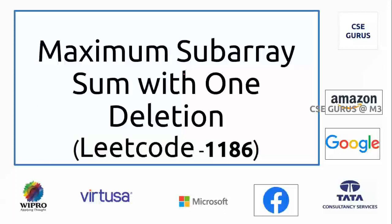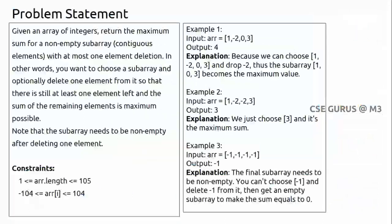This problem is about subarrays. Given an array of integers, return the maximum sum for a non-empty subarray — continuous elements — with at most one element deletion. The deletion is optional. You can choose a subarray and optionally delete one element from it, so that at least one element remains and the sum of remaining elements is maximum possible.